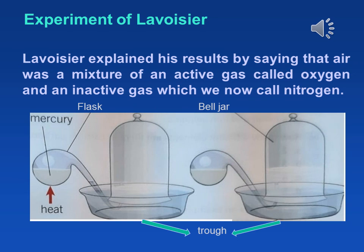Lavoisier explained his results by saying that air was a mixture of an active gas called oxygen and an inactive gas, which we now call nitrogen.